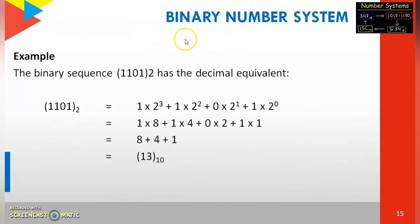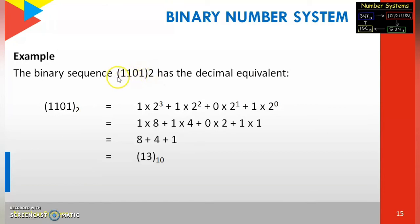Now you can see an example of the binary number system. The binary sequence 1101 base 2 — find the decimal equivalent. How do we identify this as a binary number? In these numbers we have only zeros and ones. Binary numbers have only two digits: 0 and 1. Here we have 1, 1, 0, 1 — all are binary numbers.